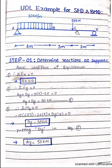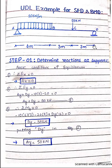We are also having a point load of 20 kilonewton at C, a hinge support at A, and a roller support at D. A hinge has two reactions — horizontal and vertical — while a roller has only one vertical reaction. Moving towards our steps, we have two steps: first, determining the reactions at supports.